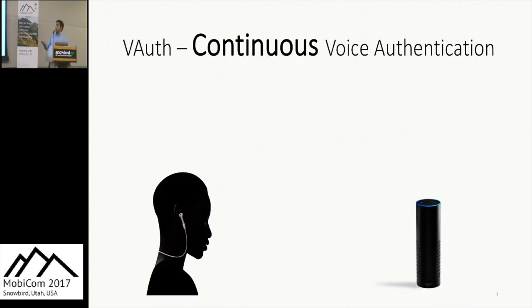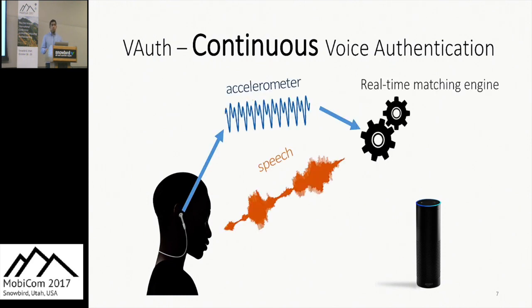This is a flow diagram of how V-Auth works. The user wears a specific device containing a high-bandwidth accelerometer, which can be bought off the shelf for $40. It leverages a basic feature of how humans generate voice — as I'm speaking, my throat is vibrating and generating a pressure wave, which is the speech signal. This signal travels over the air and through my body, causing my upper body to vibrate. We leverage these body vibrations, which correspond to the speech signal, as a physical assurance channel.